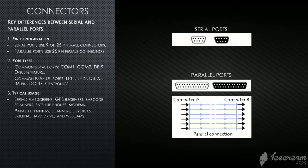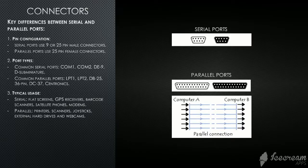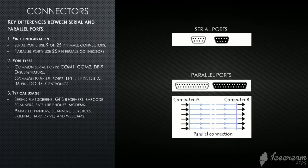The key differences between serial and parallel ports: first, pin configuration — serial ports use 9 or 25 pin male connectors, while parallel ports use 25 pin female connectors. Second, port types — common serial port types are COM1, COM2, DE9, and D sub-miniature; common parallel port types are LPT1, LPT2, DB25, 36 pin, DC37, and Centronics. Third, typical usage — serial ports are used for flat screens, GPS receivers, barcode scanners, satellite phones, and modems; parallel ports are used for printers, scanners, joysticks, external hard drives, and webcams.